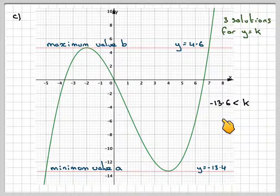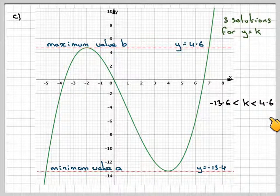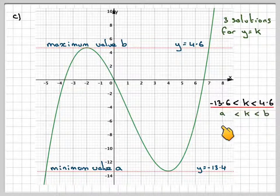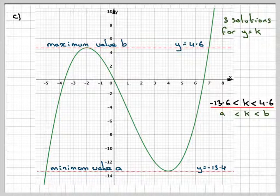So you're going to have minus 13.6 less than k is less than 4.6. So k being between a, a will be minus 13.6 and b will be 4.6.